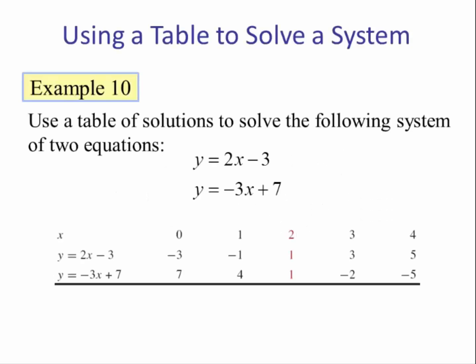Lesson objective, Example 10: Use a table of solutions to solve the system of two equations. So we have y equals 2x minus 3 and y equals negative 3x plus 7. So instead of graphing, we are going to look at the table for each equation. And we see here are the outputs for these values of x for the first equation, y equals 2x minus 3, and here are the outputs for the same x's for the second equation, y equals negative 3x plus 7. And we see when x is 2.